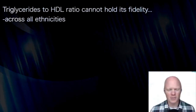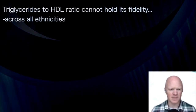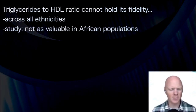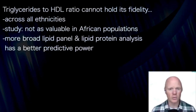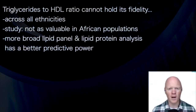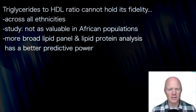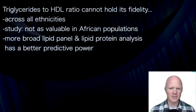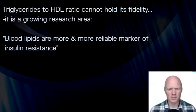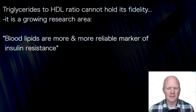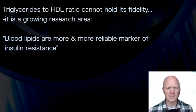That ratio can't maintain its fidelity across all ethnicities. A study highlighted that the triglyceride to HDL ratio is not as valuable in an African population. There is a growing body of evidence suggesting that a more broad lipid panel and lipoprotein analysis actually has better predictive power than the triglyceride to HDL ratio alone — and this is a growing area with recent manuscripts touching on the theme that blood lipids are an increasingly reliable marker of insulin resistance.